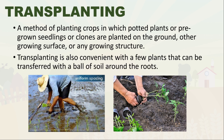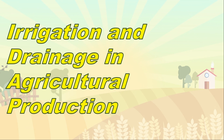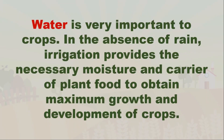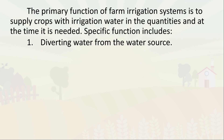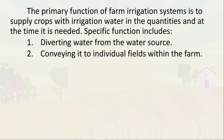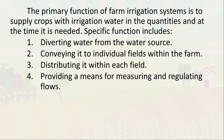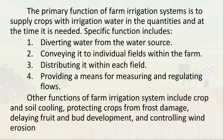Next is irrigation and drainage in agricultural production. Water is very important to crops. In the absence of rain, irrigation provides the necessary moisture and carrier of plant growth to obtain maximum growth and development of crops. The primary function of an irrigation system is to supply crops with water in the quantities and at the time needed. Specific functions include diverting water from the source, conveying it to individual fields, distributing it within each field, and providing means for measuring and regulating flows. Other functions include crop and soil cooling, protecting crops from frost damage, delaying fruit and bud development, and controlling wind erosion.